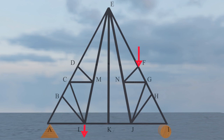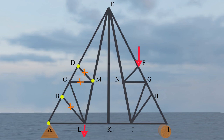Starting with joint A: there is a reaction and two members, so both will have some forces. At joint B, applying rule 2, member BL will have zero member force. At joint D, the same case applies, so member DM will have zero force. After removing these two members, member MC will also have zero force by applying rule 2 at joint M. Applying the same rule at joint C, member CL will have zero force. So these four members have zero force — remove them all from the structure.